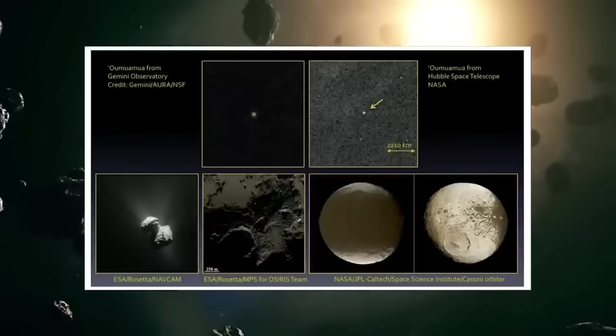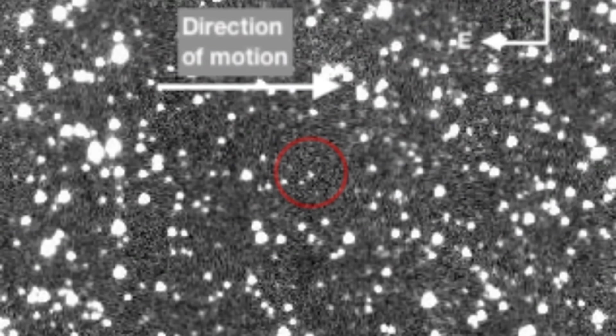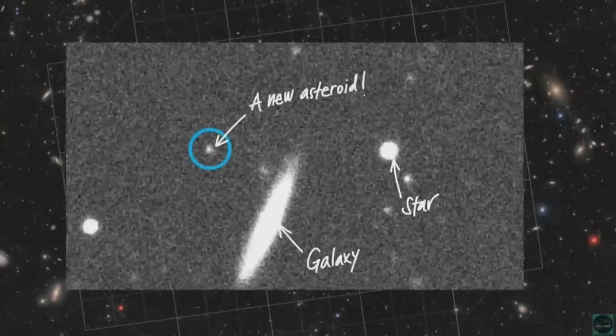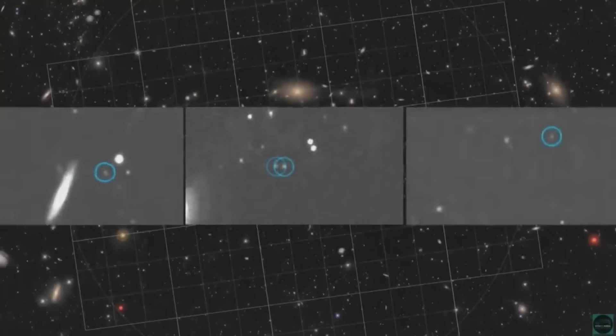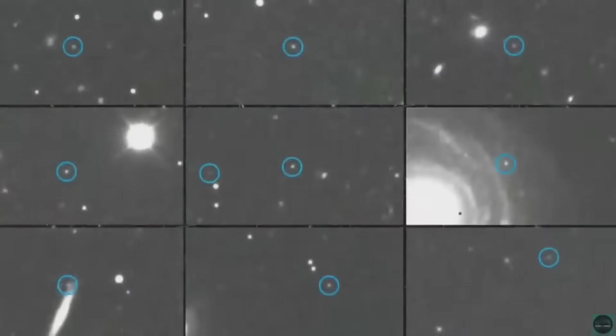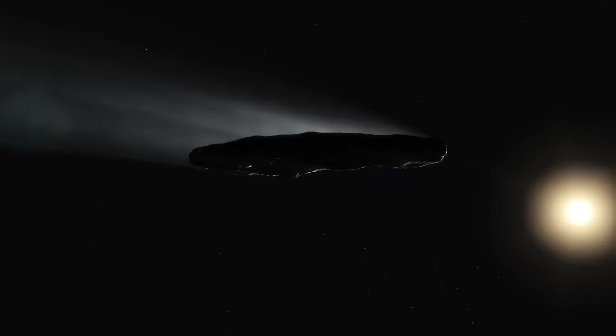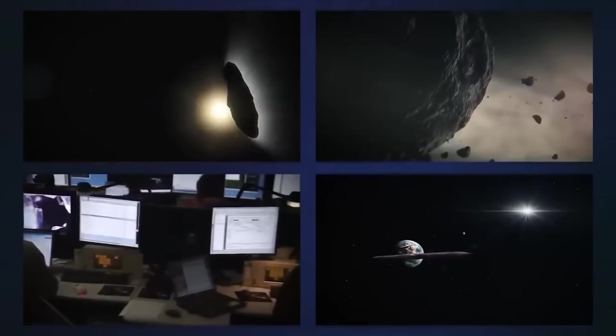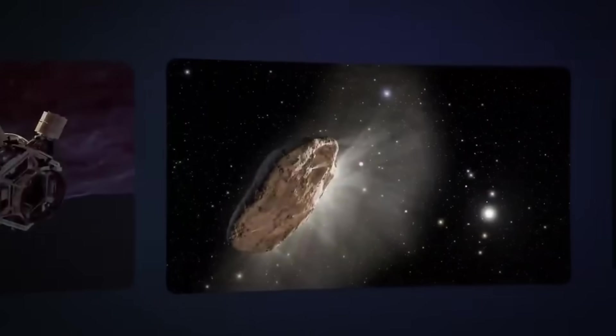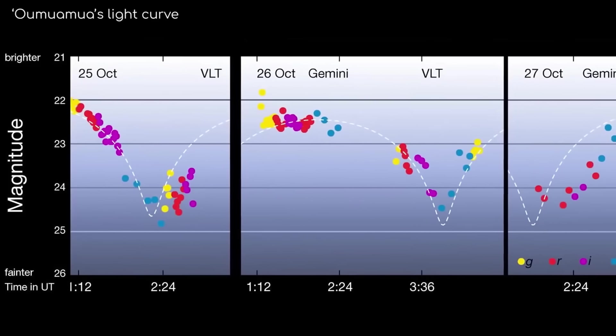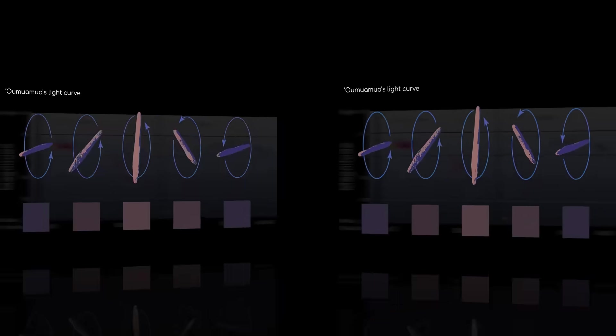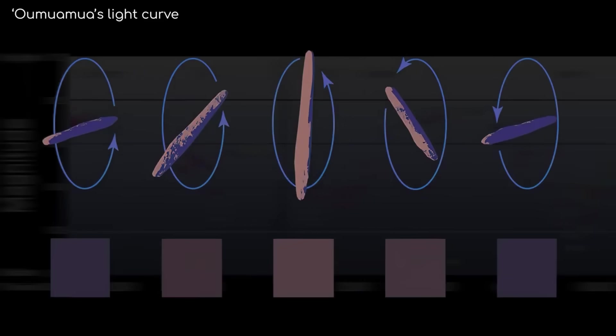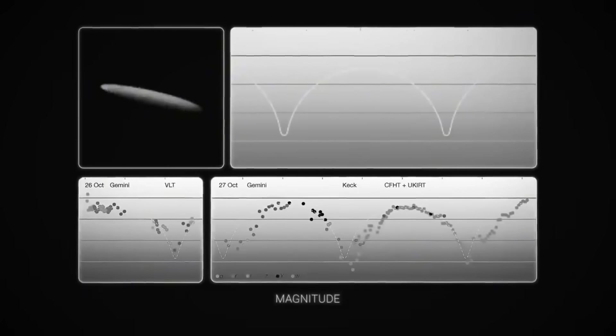As Kaku himself often says, Somewhere out there, the truth is waiting. With open minds and better tools, we just might find it the next time a tiny light from afar graces our skies. Don't miss what's coming next. Subscribe and join us the moment the next interstellar visitor arrives.